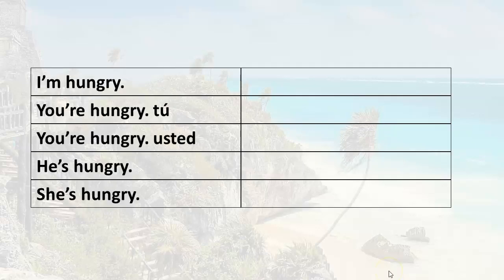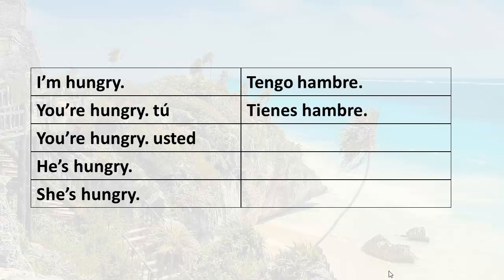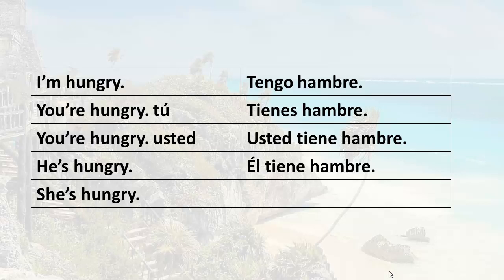Now let's go ahead and apply what you've learned. You know how to say I am hungry — tengo hambre. How would you say you're hungry using tú? Tienes hambre. You're hungry using usted? Usted tiene hambre. He's hungry — él tiene hambre.